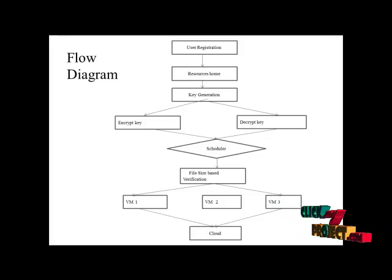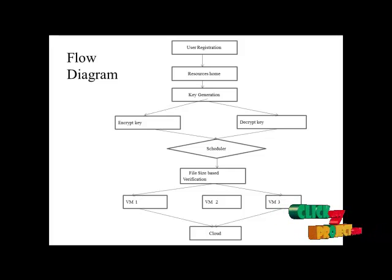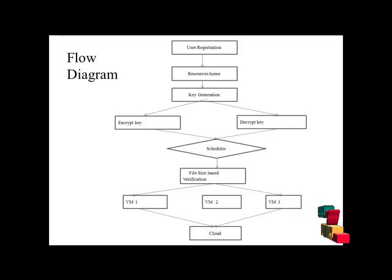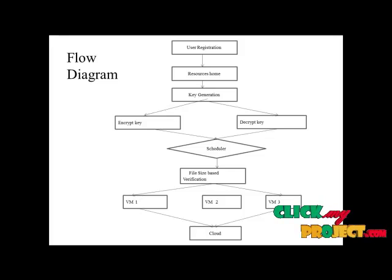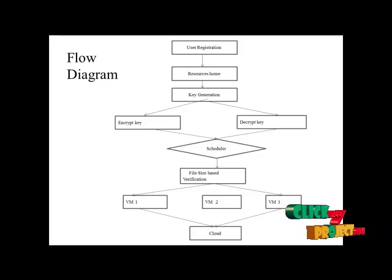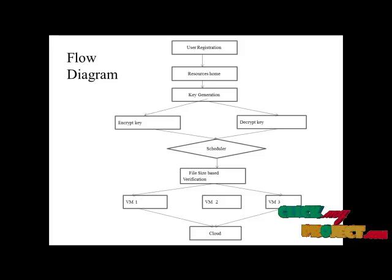The user retrieves the data using cryptographic mechanisms — specifically a decryption key. Using the decryption key, the user downloads the data based on file size. With VM1, VM2, and VM3 separating the data in the cloud, the user can easily retrieve their data.